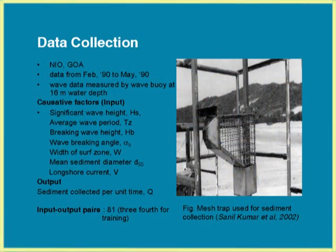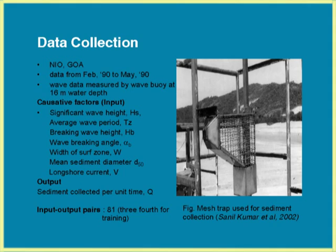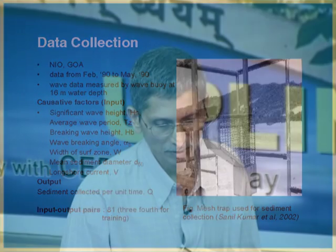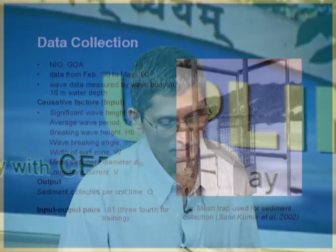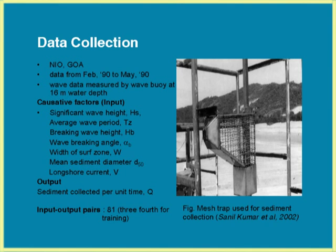In that coast, in the field for about 4 months, he collected data from February 1990 to May 1990, including significant wave heights, average wave period, breaking wave height, breaking wave angle, width of surf zone, mean sediment diameter, longshore current, and so on. The sediment was also collected in order to know its rate Q per unit tank. This is a typical mesh trap to collect the sediments. We had to discard a large amount of data because all these values were not simultaneously available at many times, and ultimately we ended up with only 81 data examples.